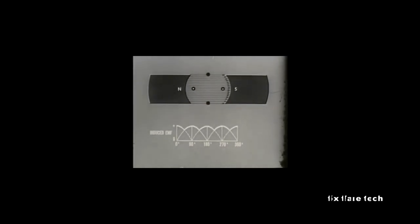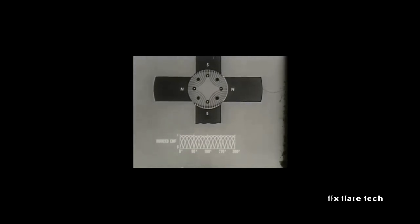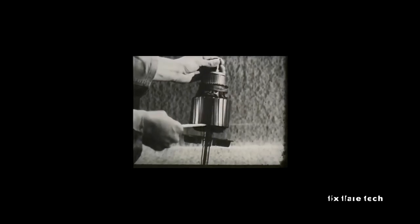However, even with two loops and four commutator segments, the rectified curve is still somewhat irregular. By adding magnets, we increase the number of fields cut by the armature. As we increase the number of loops and commutator segments, the variation between maximum and minimum value decreases, tending to flatten the DC output. Practical DC generator armatures have a great many loops wound on a rotor. The field is composed of many electromagnets. Together, these factors tend to create an almost pure DC output.